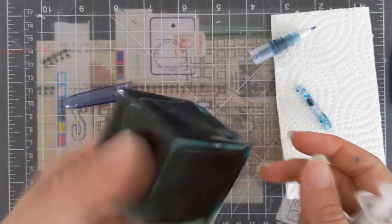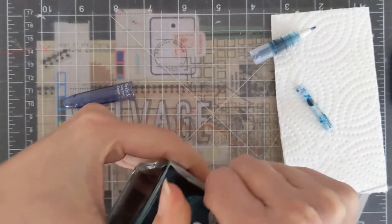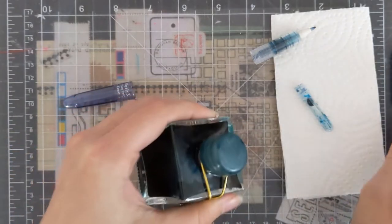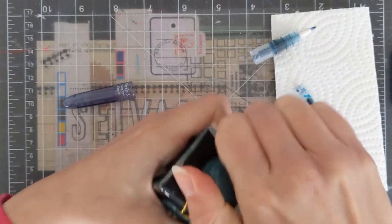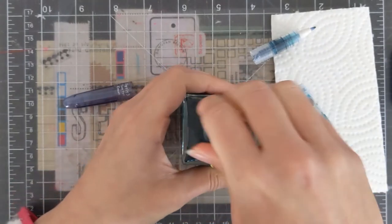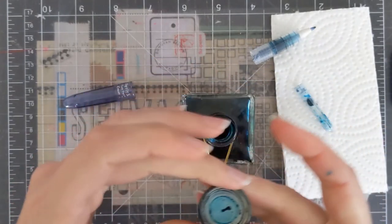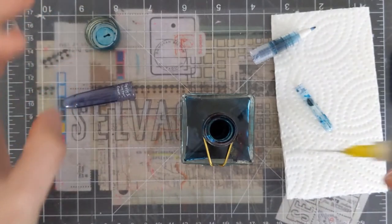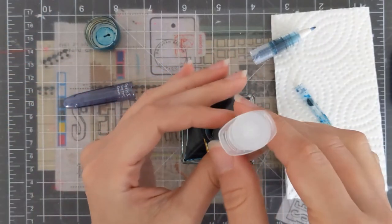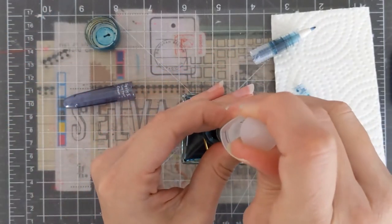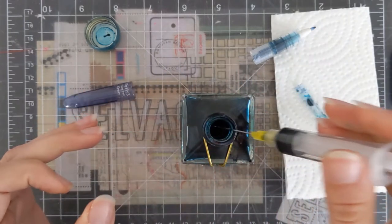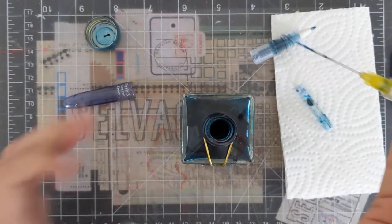And I shake it up first because it's got those particles in it, so I want those particles to be in suspension for when I suck up my ink. And this little guy does not hold a ton of ink, so I'm not actually pulling up a bunch of it. You can see I've got some ink in my syringe now.